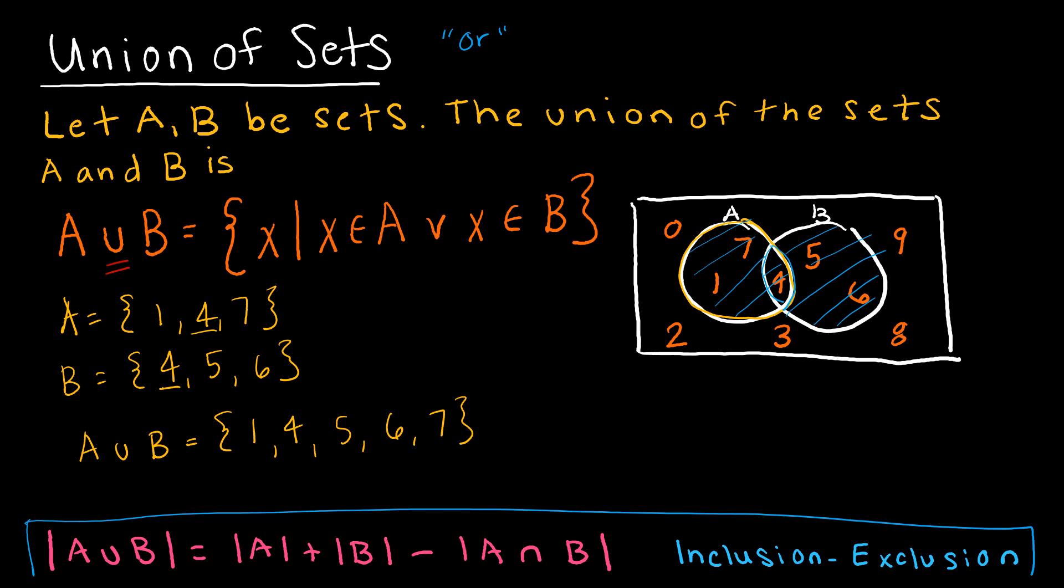Here, if I had A union B, I could take all of the elements of A, which would be 1, 4, 7. And add all of the elements of B, which is 4, 5, 6. And then I'm just going to subtract anything that's here. And we haven't talked about this quite yet, but this is the intersection.